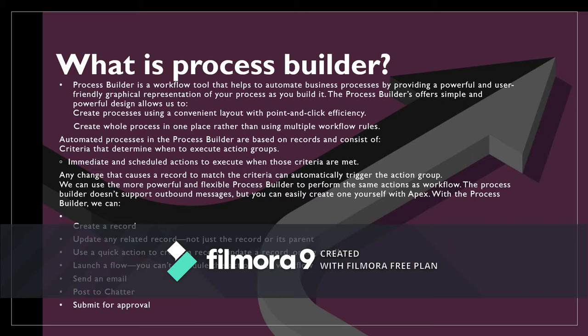The Process Builder offers simple and powerful design — it allows us to create processes using a convenient layout with point-and-click efficiency, and to create a whole process in one place rather than using multiple workflow rules. Automated processes in Process Builder are based on records and consist of criteria that determine when to execute action groups. Those actions can be immediate or scheduled, and any change that causes a record to match the criteria can automatically trigger the action group.